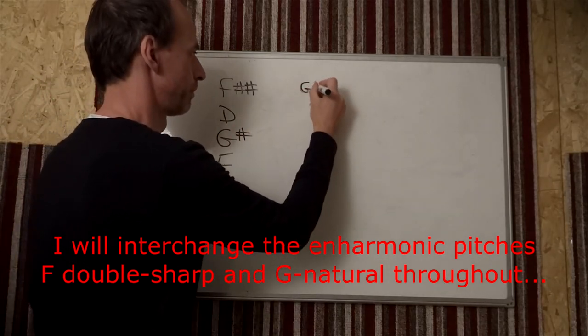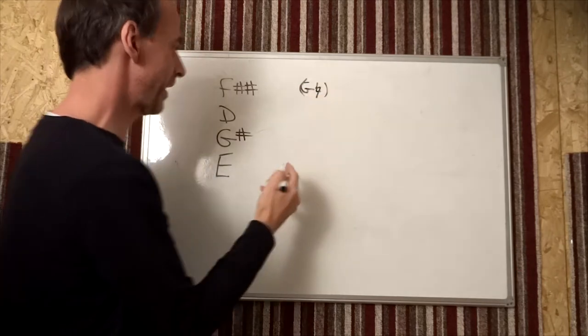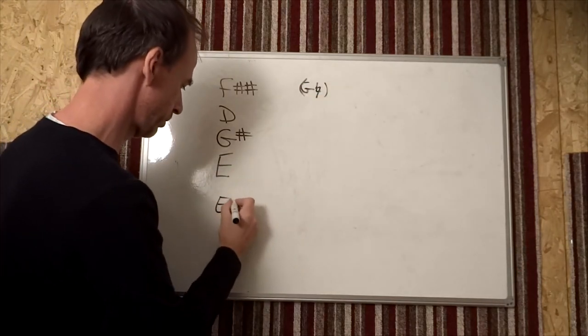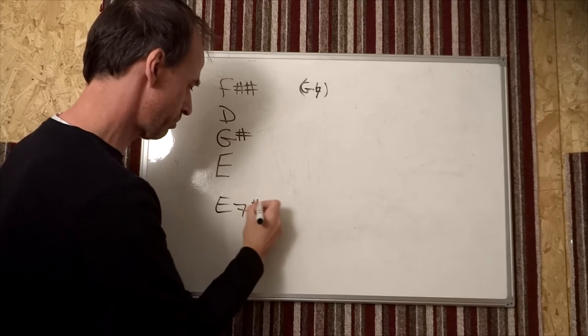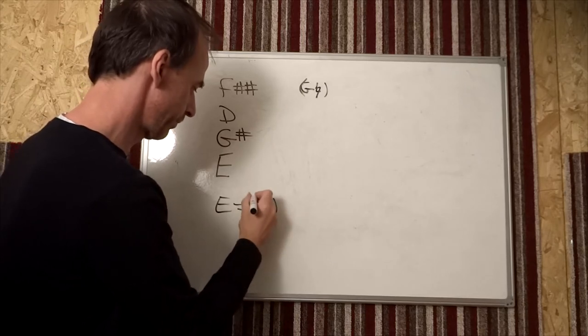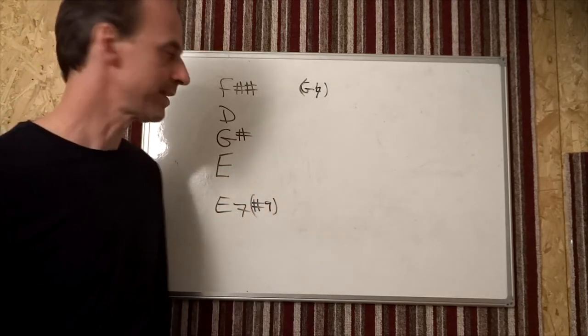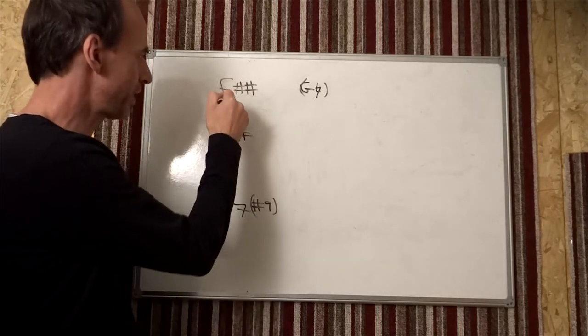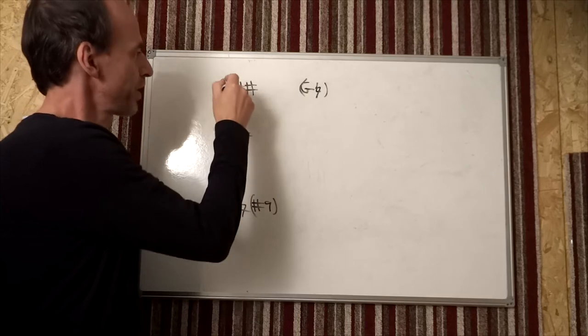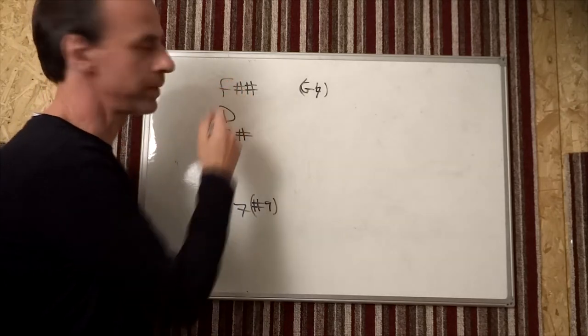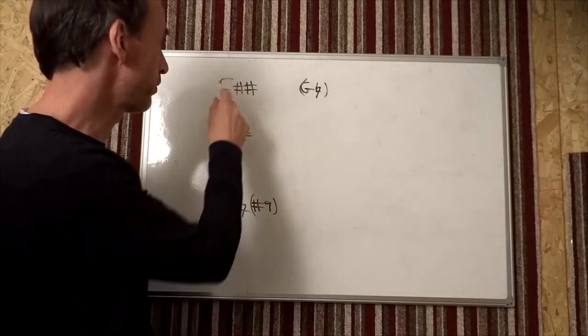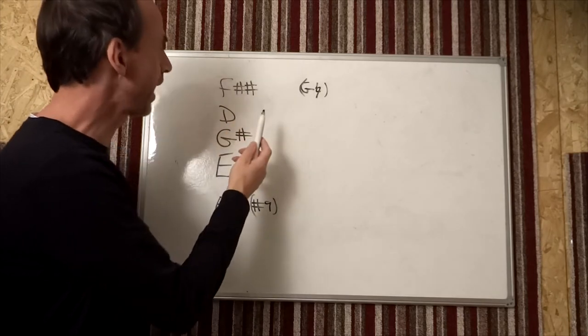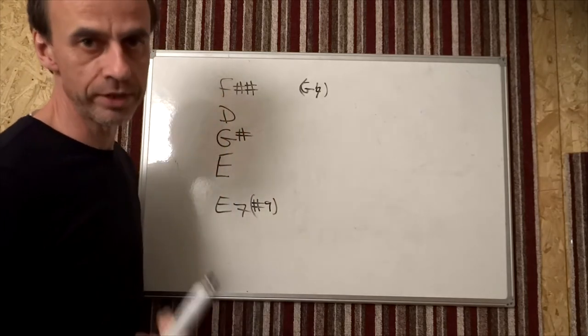Actually, the name of the chord is E7 with an added sharp ninth, which means that when you get to the octave, there's an E up here. One note more in the scale would get you to your F-sharp, and that would be your ninth. To sharpen that ninth, it's why it's called a double-sharp.